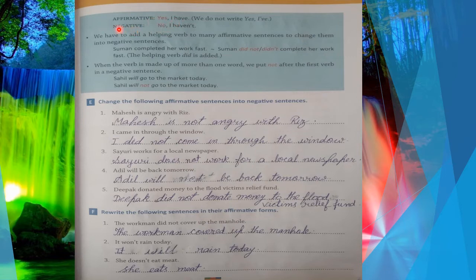If the answer is negative, you write 'No, I haven't' — you can use the contraction form, the shortcut form. We have to add a helping verb to many affirmative sentences to change them into negative sentences. We use all types of helping words to change from affirmative to negative.